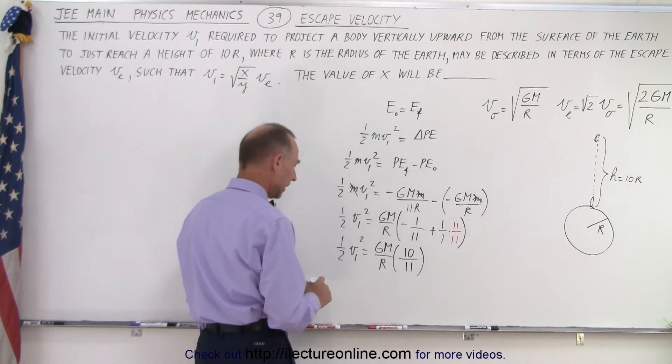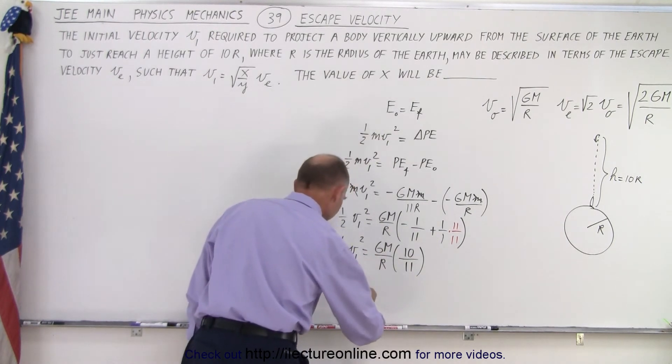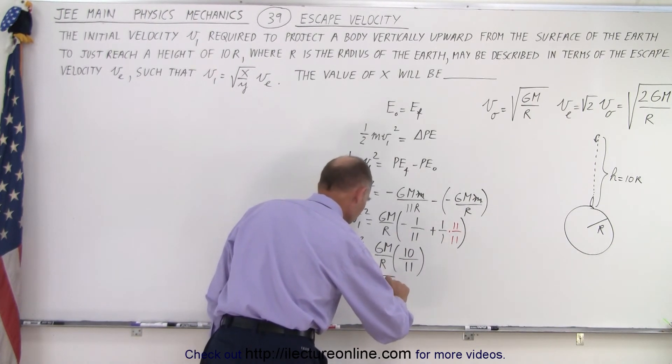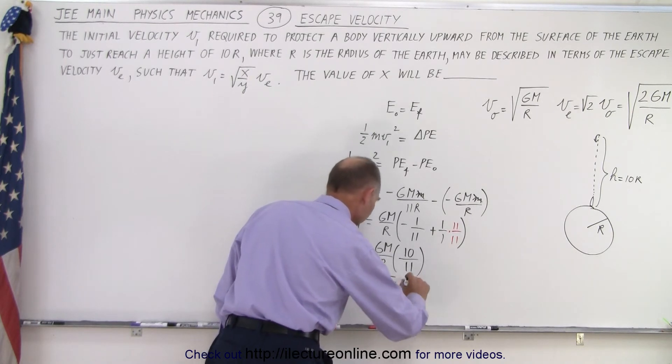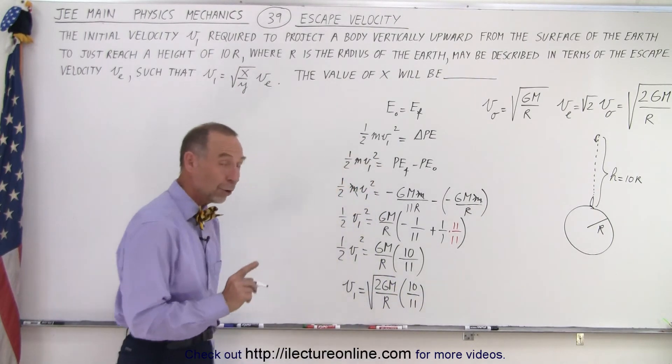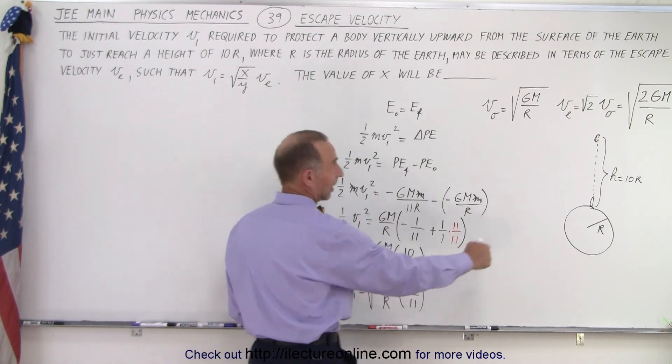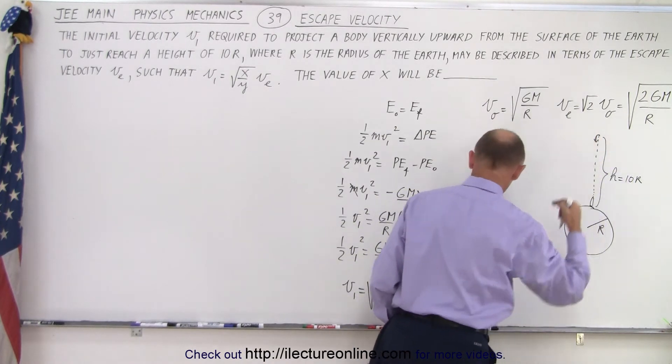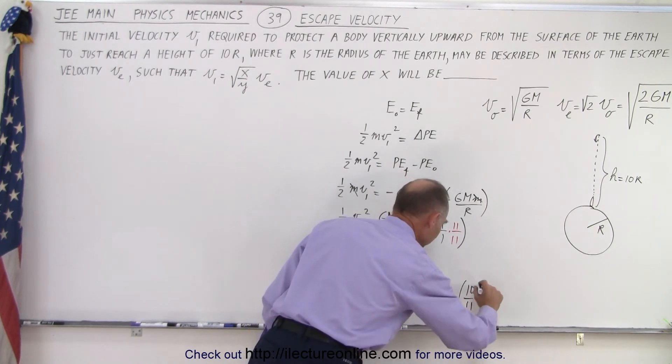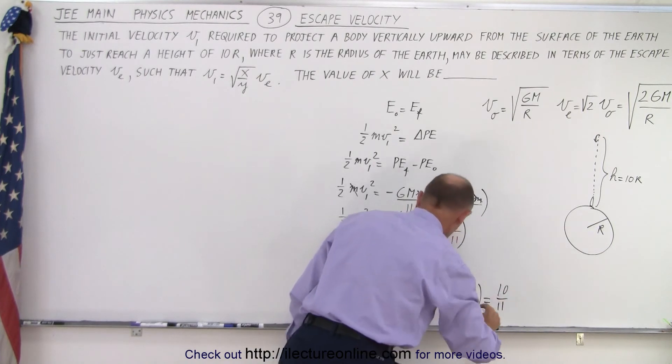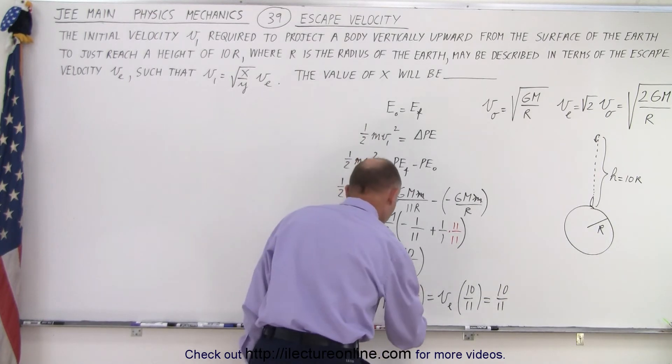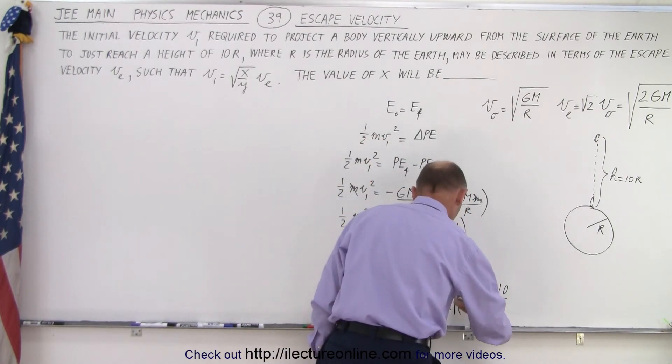Then I can bring the 2 over here so I can say that v1, I'm going to take the square root, equals the square root of 2GM over r times 10 over 11. Now notice that this quantity right here, that's exactly what I had for the escape velocity, and so this can then be written as the escape velocity times 10 over 11. Of course the square root goes all the way across here.